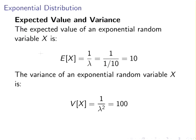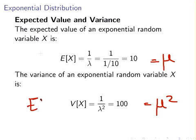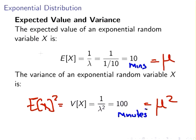Finally, the expected value and variance. The expected value of X is one divided by lambda, which is one divided by one tenth, equaling 10 minutes. The variance is one over lambda squared, which is mu squared, equaling 100 minutes squared. Equivalently, the standard deviation is 10 minutes.